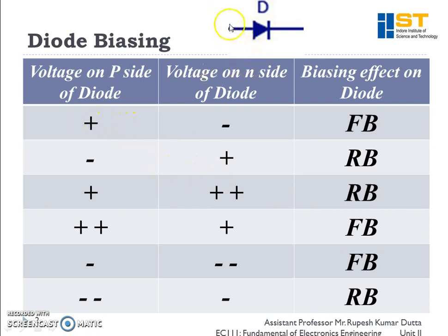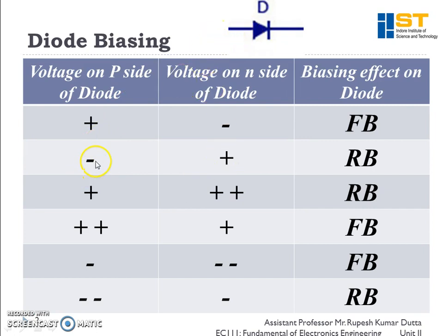If you apply a positive voltage to the positive side of the diode and a negative voltage to the negative side of the diode, it is known as the forward bias condition. If you apply the reverse — negative voltage to the positive terminal and positive voltage to the negative terminal — it is known as the reverse bias condition.